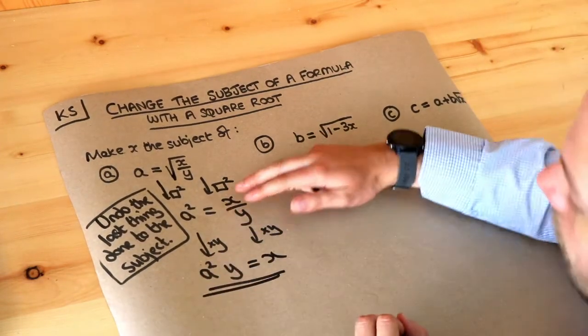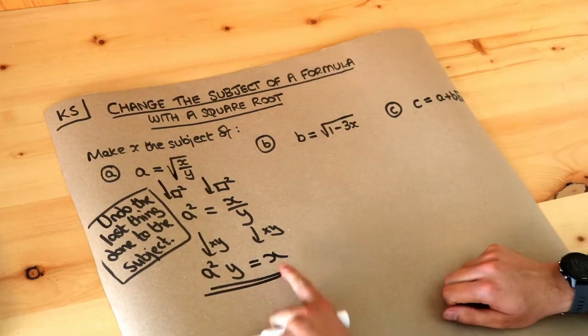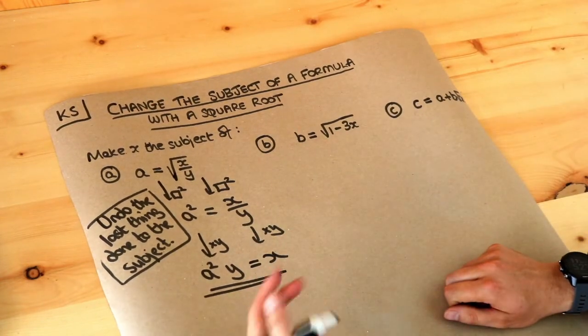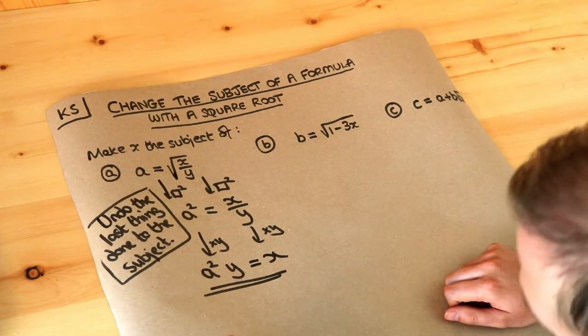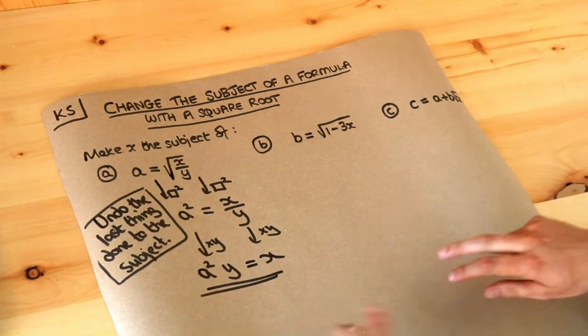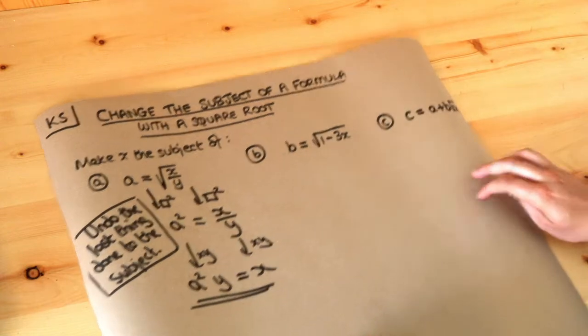And that's the final answer. We could write x equals a squared y if you prefer x on the left hand side of the equation, but it doesn't really matter.